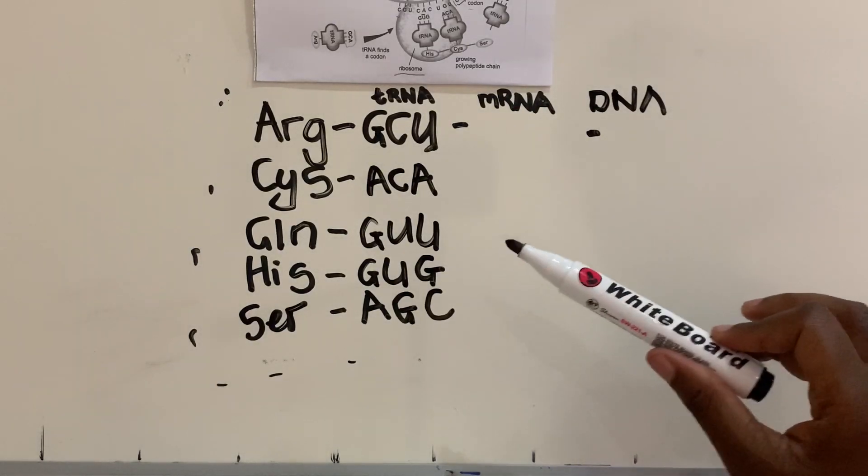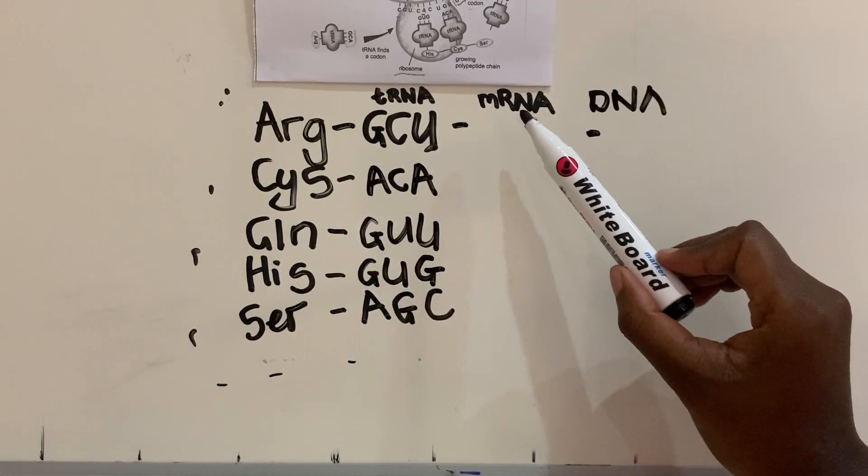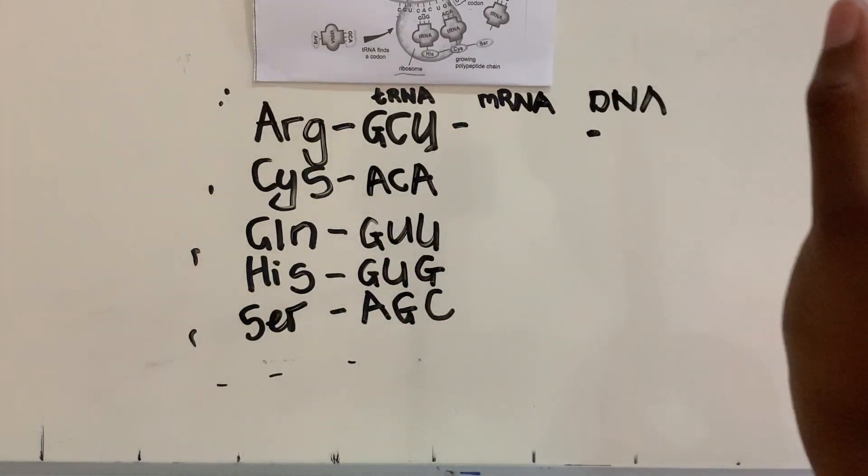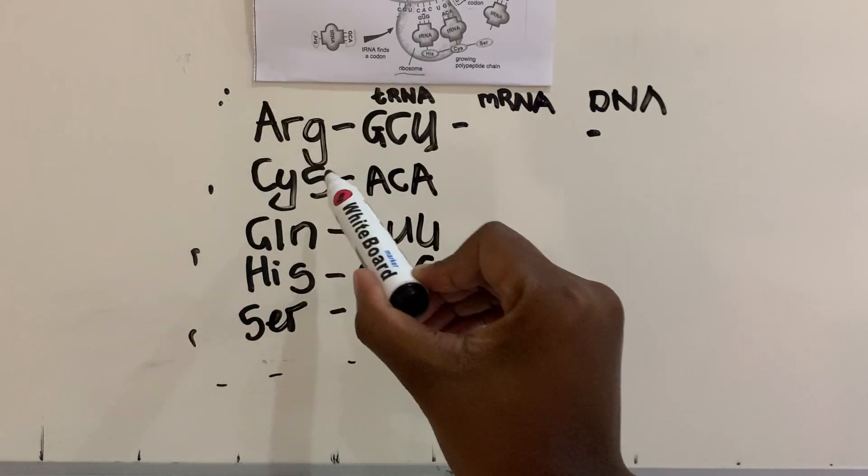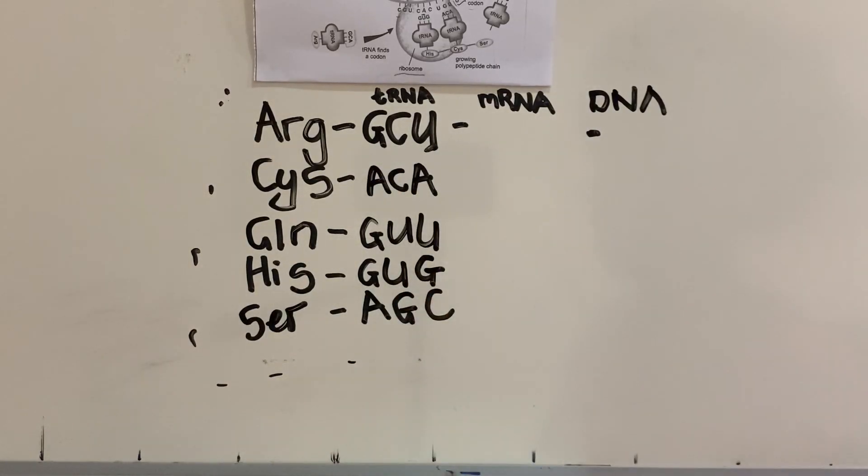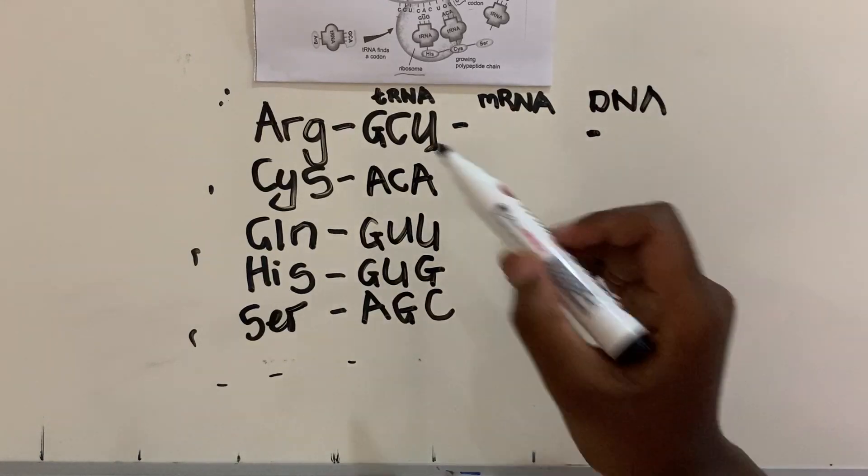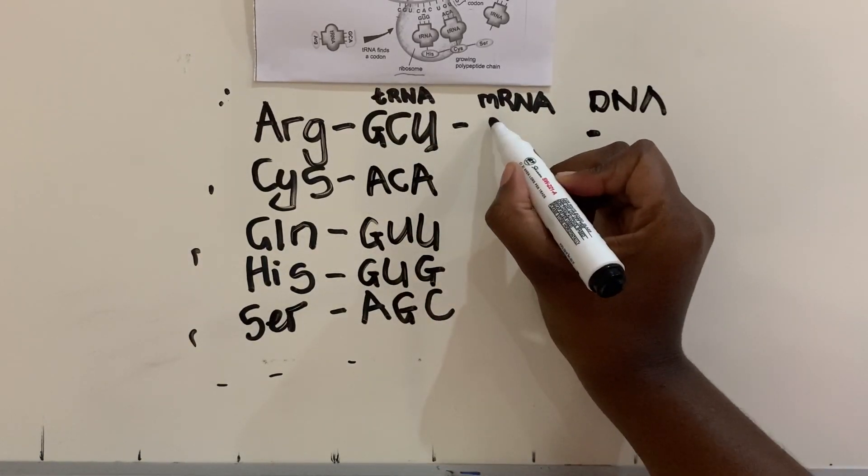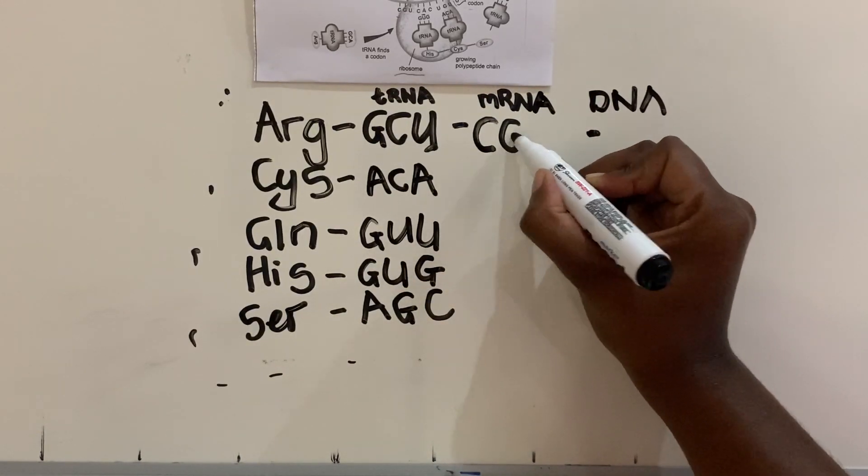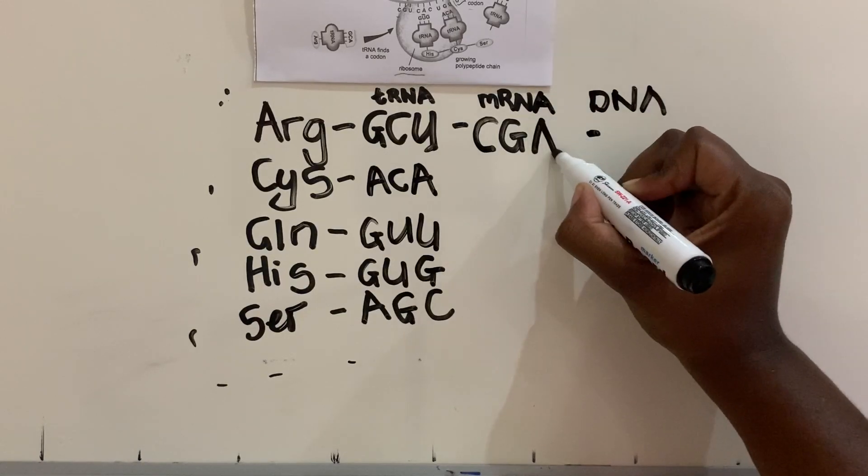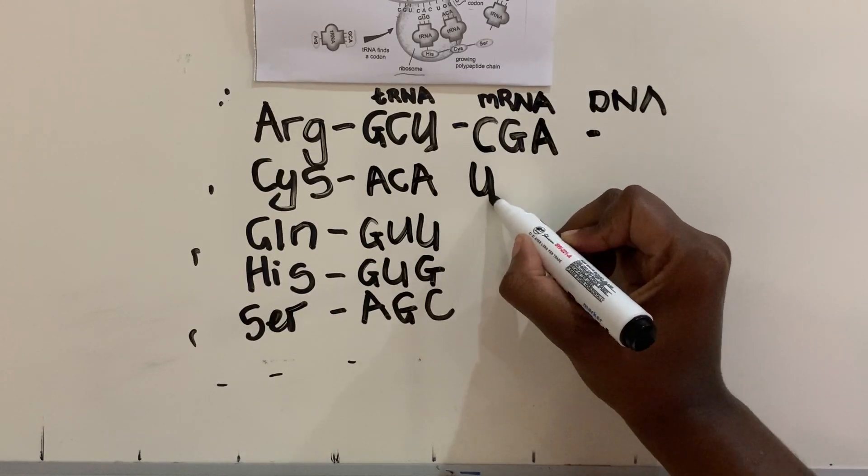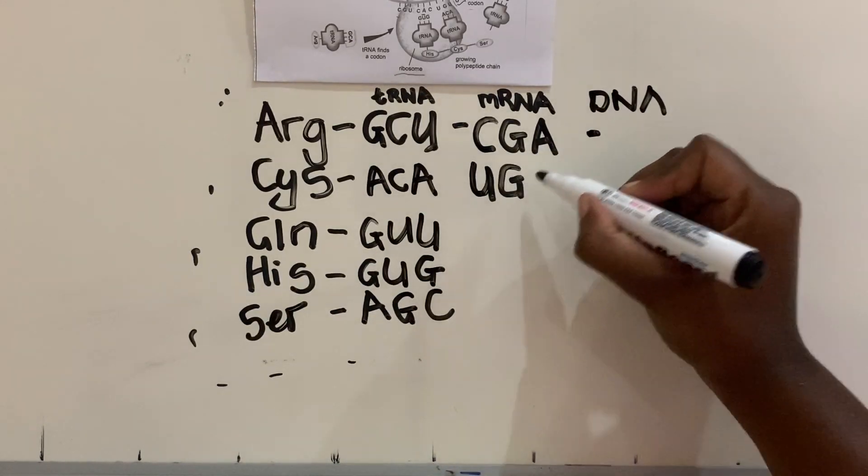So the table is going to have that Arg, and the tRNA anticodons for it are GCU. So if you have to write down the mRNA, it's as easy as knowing that G binds with C, C binds with G, and U binds with A. And then you go down: A in RNA binds with U, C binds with G. And you do the same thing.